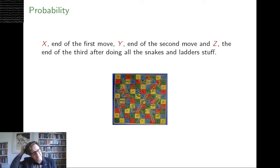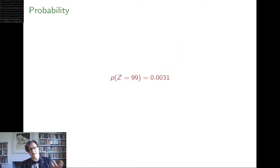So the sample space of these random variables is slightly complicated in a way that's not very interesting. So Y is where you are after the second move and Z is where you are at the end of the third move. And what we're interested here is the probability that Z is equal to 99, interested for the purpose of this example. And I work it out.